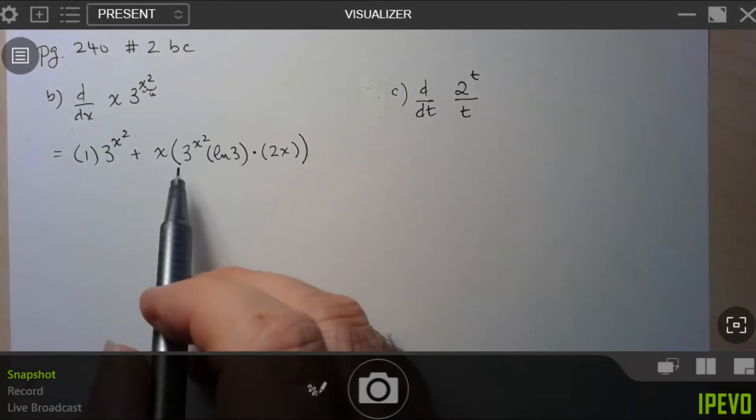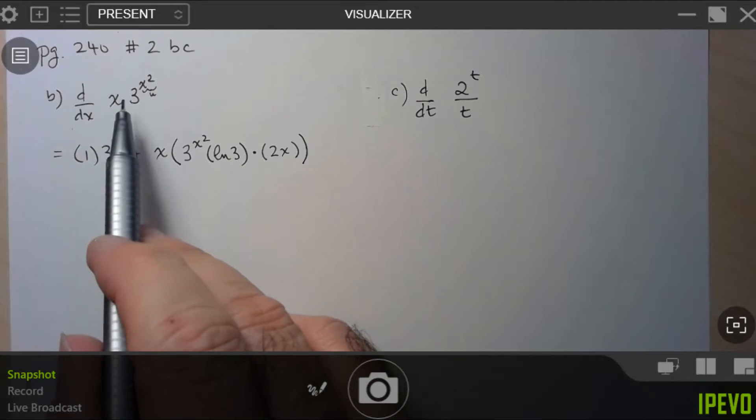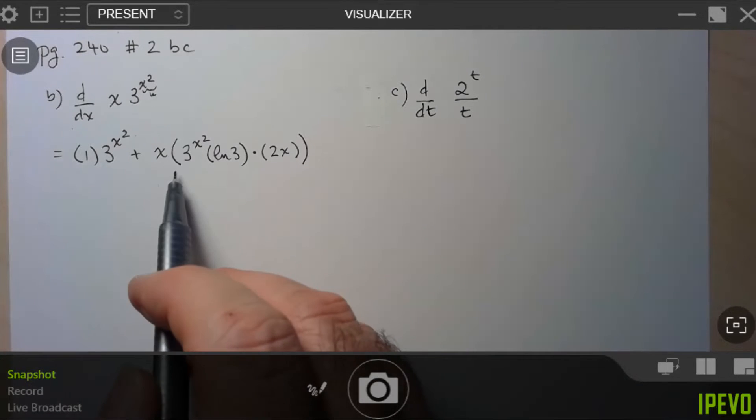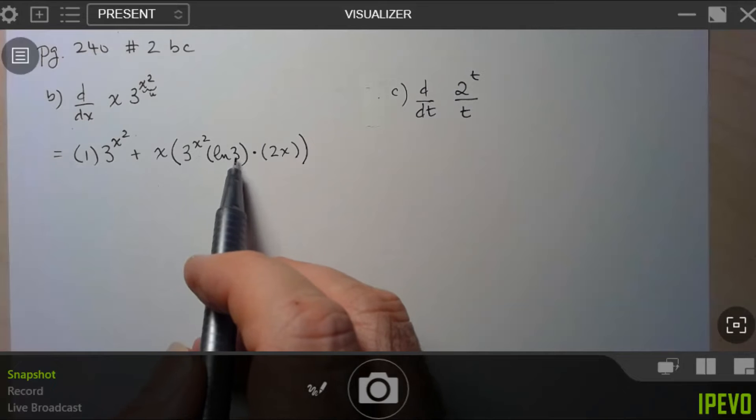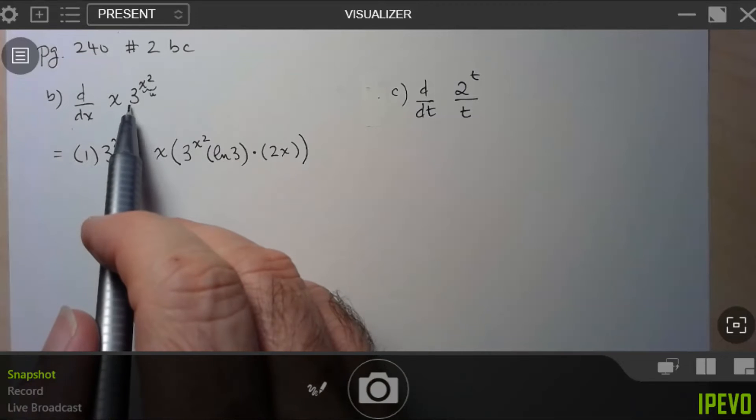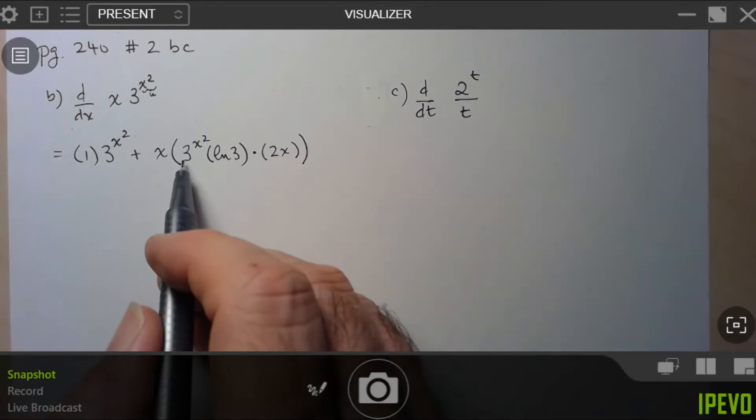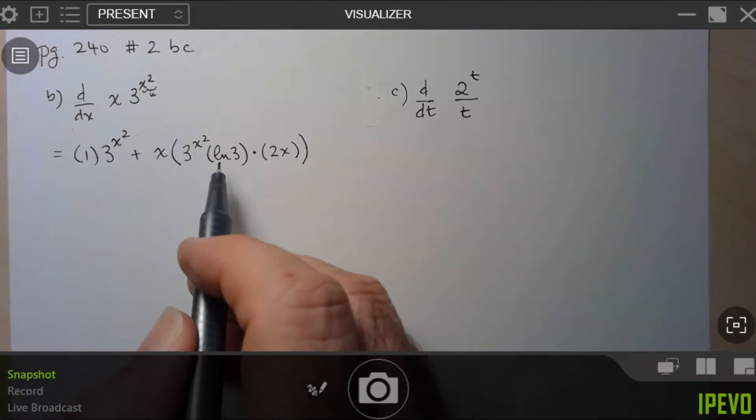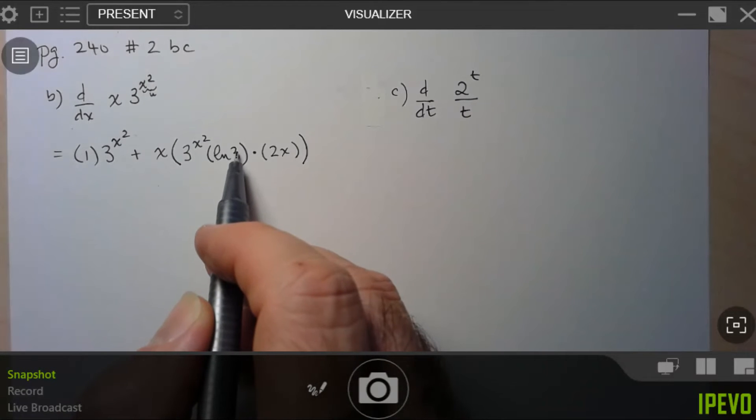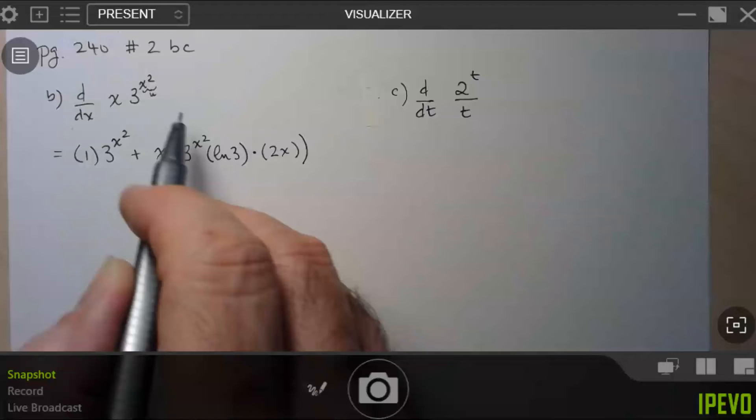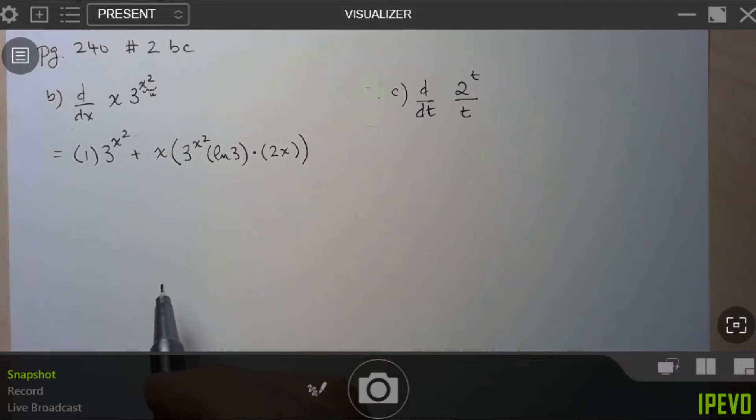So again, remember the formula for the derivative of an exponential function is just itself times the logarithm, natural logarithm of the base. So here, derivative of 3 to the u is just 3 to the u times natural logarithm of the base, which is 3. And then, of course, you have to multiply by the derivative of the inside function.